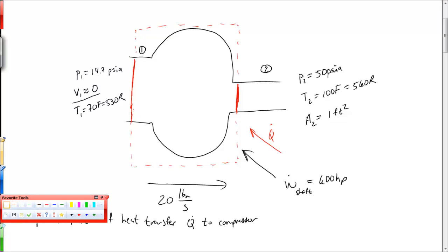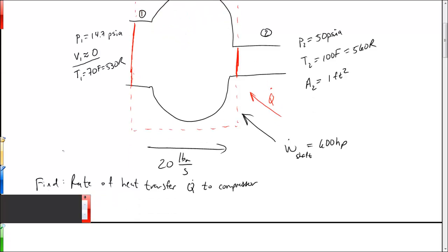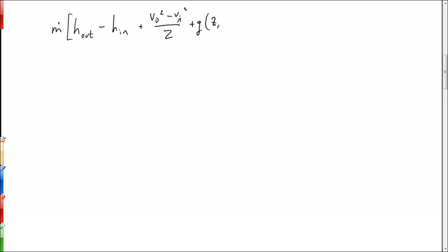So using what we know about the conservation of energy that we developed using the Reynolds transport theorem, we showed that M dot times the enthalpy per unit mass out minus the enthalpy in, plus V out squared minus V in squared over 2, plus g times Z out minus Z in, the change in height, and all of that has to be equal to the rate at which heat is being added to the system,